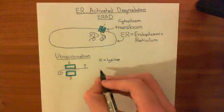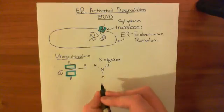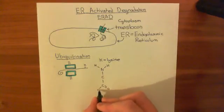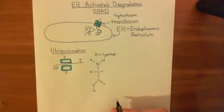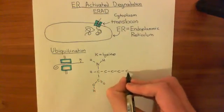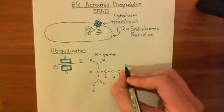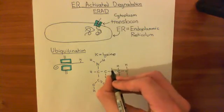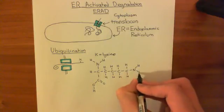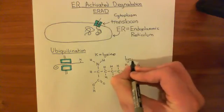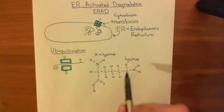Let me show you the structure of the amino acid lysine. We start with the basic amino acid structure: an amino group, the alpha carbon, and a carboxylic acid group. Off the alpha carbon there is also a hydrogen. The R group of lysine consists of four methylene groups, and at the end of this four-carbon R group there is an additional amino group. That is the structure of lysine. We're going to add the ubiquitin group onto this terminal amino group.